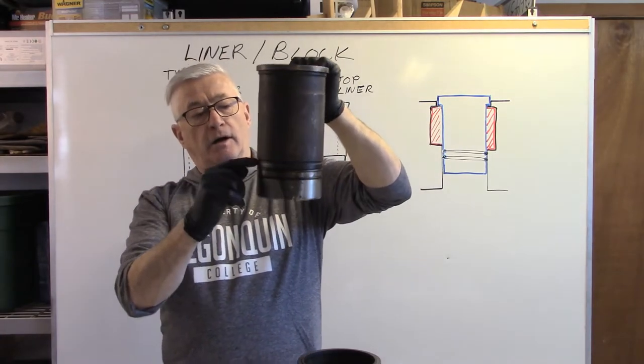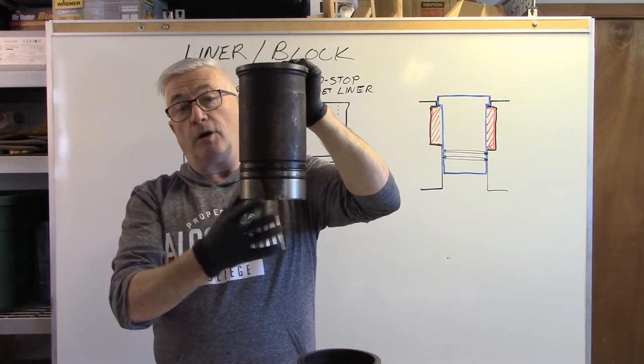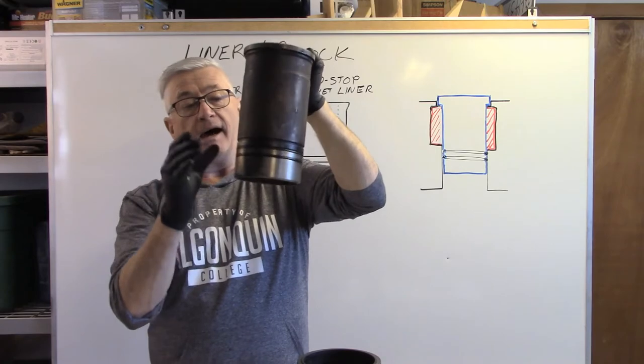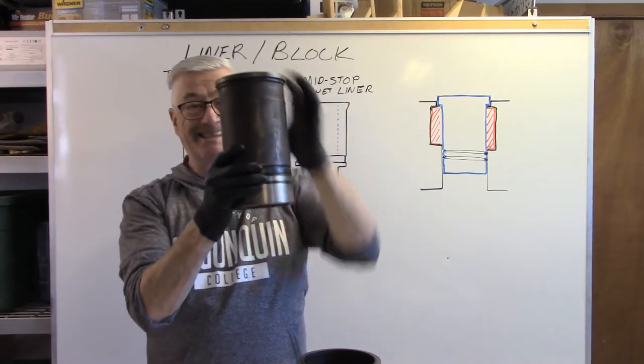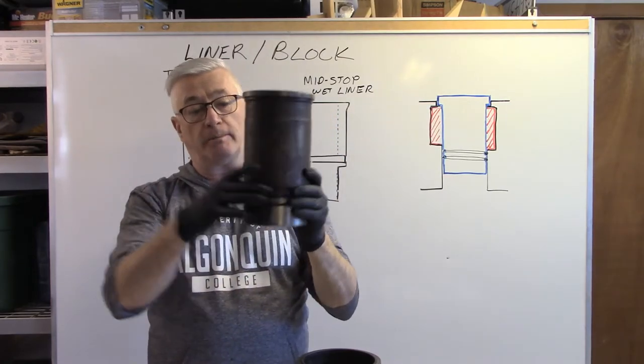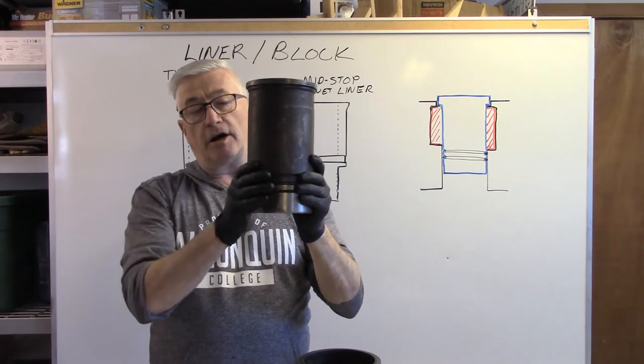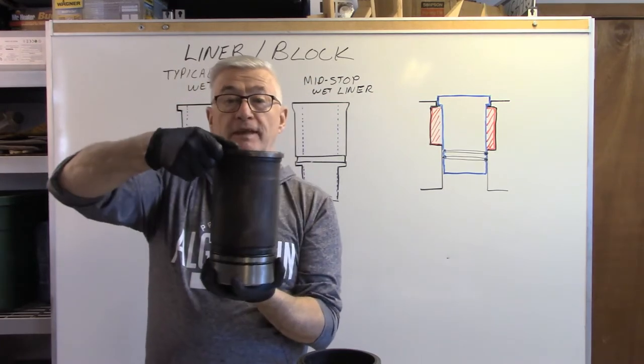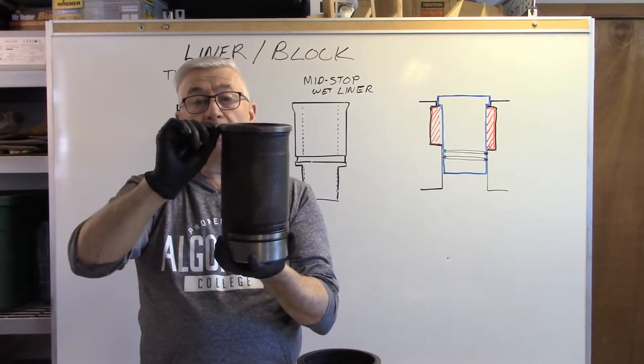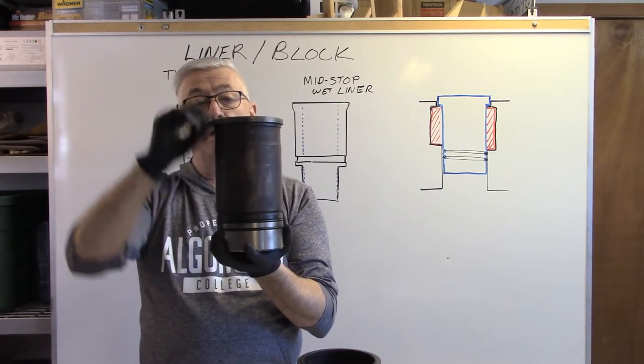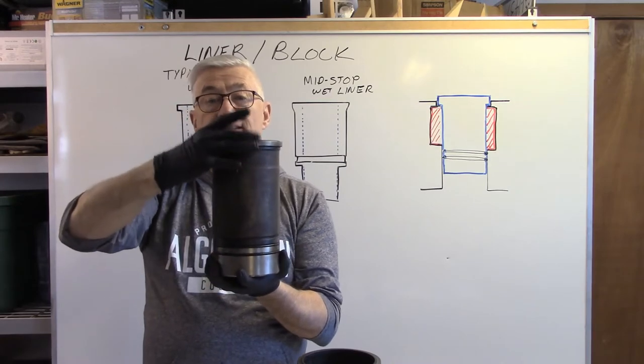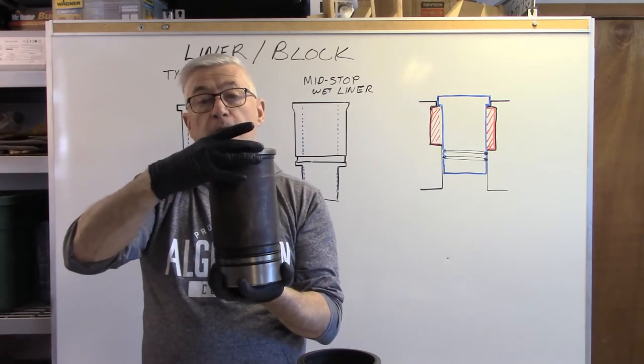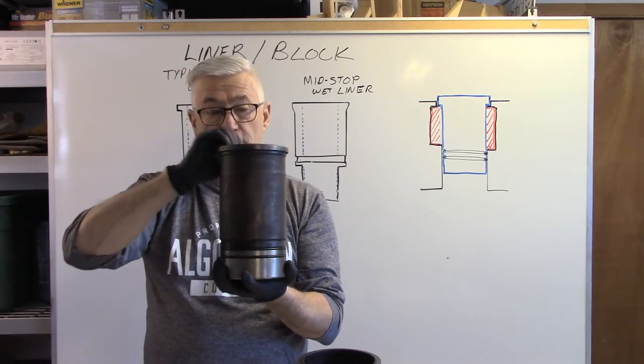We have our multiple O-rings and flat seals, square rings, all different types at the bottom and that provides a seal in the bottom and between contact between the liner and the block. On the top of this, we don't have any O-ring in here at the top but what we would use is built into the head gasket that goes over the top of this liner would provide a seal on the top section.